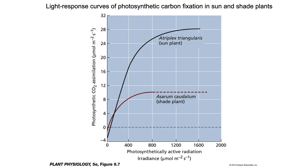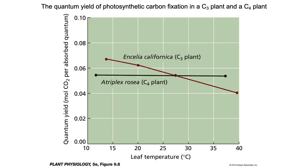Comparing light response curves of sun and shade plants, we can see quite a difference. Shade plants typically have low light compensation points and lower maximal photosynthetic rates than sun plants. Asarum caudatum is wild ginger, and Atriplex triangularis, commonly known as saltbush, is a halophyte capable of growing in hot and salty environments. This figure shows the quantum yield of photosynthesis in a C3 plant versus a C4 plant. Quantum yield is a measure of the efficiency of carbon fixation.